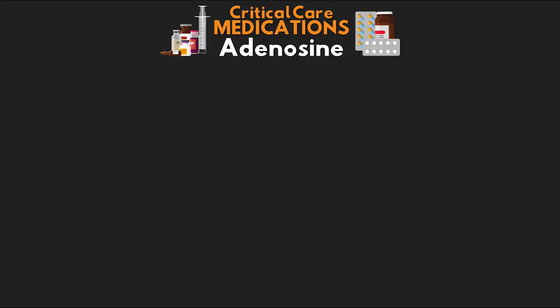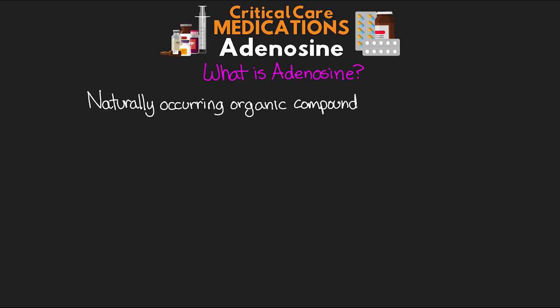Adenosine is a very interesting medication on a lot of different levels, from its diverse forms that we find in our biology to the various effects and potential uses for diagnostics and therapeutically treating our patients. To start this off, I want to talk about what adenosine actually is. It is a naturally occurring organic compound — something that we call a purine nucleoside.